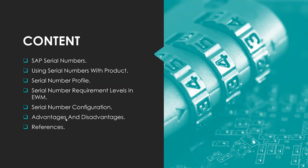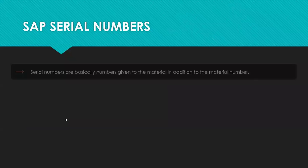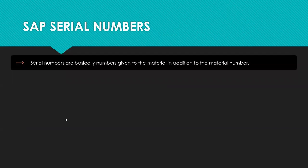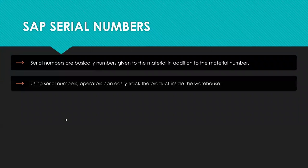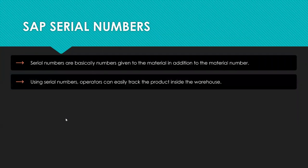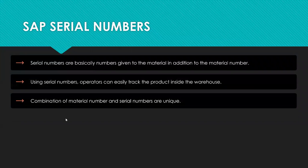Serial numbers are basically numbers given to a material in addition to the material number. It's like a handling unit number but it's a unique combination tied to the material. Using serial numbers, an operator can easily track the product inside the warehouse. The combination of material number and serial number is unique.